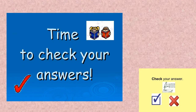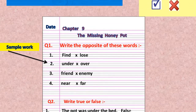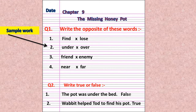Let's check your answer. This is a sample work. You will do this work neatly in your English Literature exercise book. Write the date, Chapter 9: The Missing Honey Pot. Question one: write the opposite of these words — find/lose, under/over, friend/enemy, near/far. Question two: write true or false — number one: the pot was under the bed, false; number two: Wobbit helped Todd to find his pot, true.